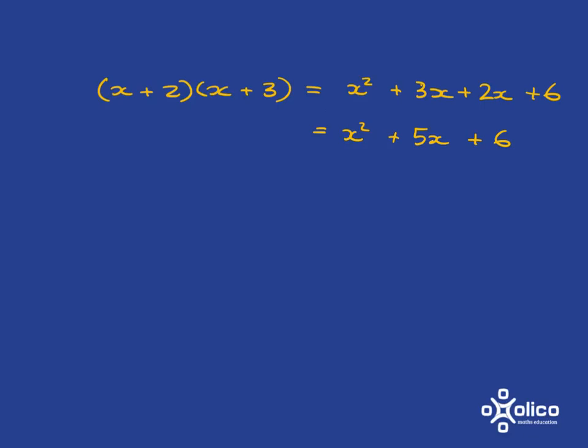Now the thing I want us to notice very carefully here is that this 6 we get by multiplying these two together. It's got by saying 3 times 2. And this 5, we get it by saying that we take the 3 and we add 2 to it.